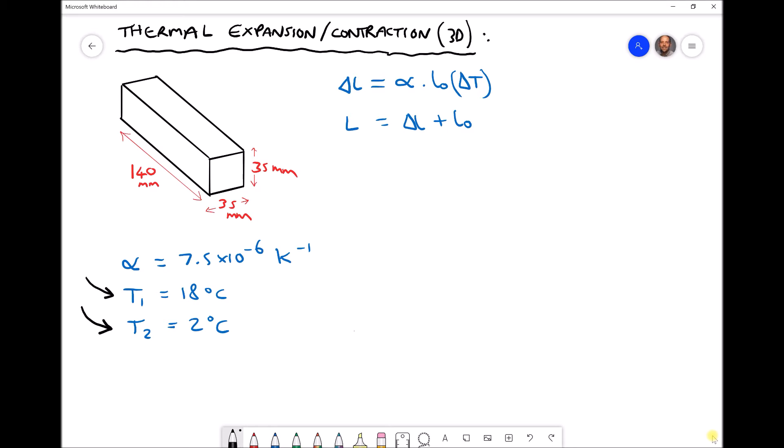Now note that because the block is being cooled from a temperature of 18 degrees to a temperature of 2 degrees C, each of those dimensions are going to contract, therefore the volume is going to contract. That means our change in volume is going to be negative.